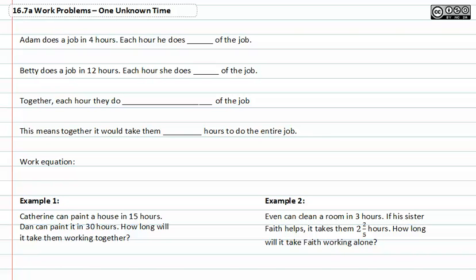Adam does a job in four hours. So when we're talking about hours, each hour he does one quarter of the job. If Betty does a job in twelve hours, each hour she does one twelfth of the job. If they're working together, each hour they do one quarter plus one twelfth.